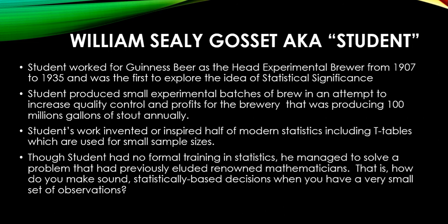He had a problem and was told by the statistical community, 'Yeah, you can't do that.' And he said, 'Yeah, I can.' He went out and found a way to make really sound, statistically based decisions even though he would have very small sets of observations — maybe two, five, or seven. So he had really small sample sizes and still was able to create a statistically sound study, all to improve the beer he was brewing.